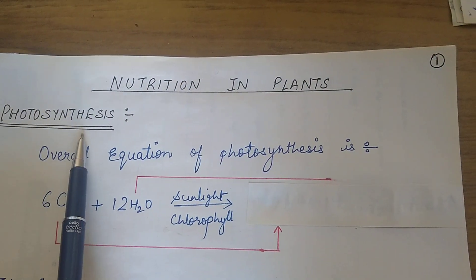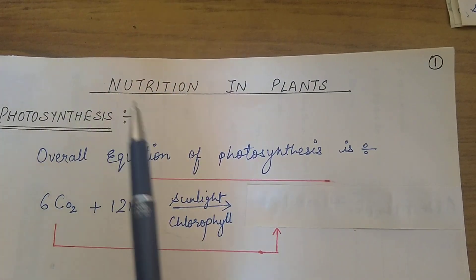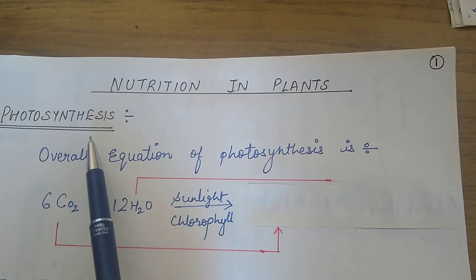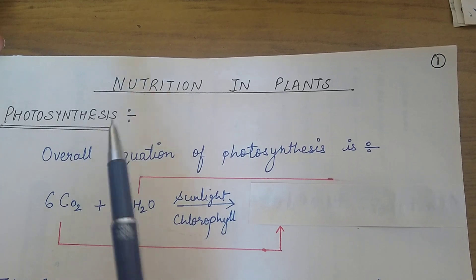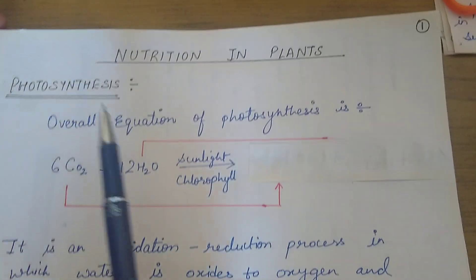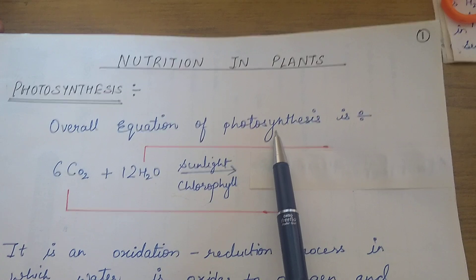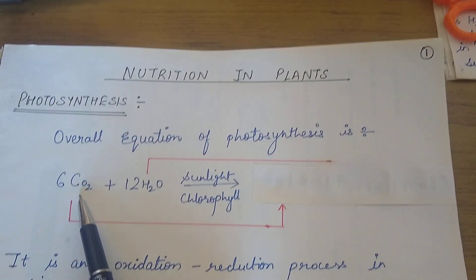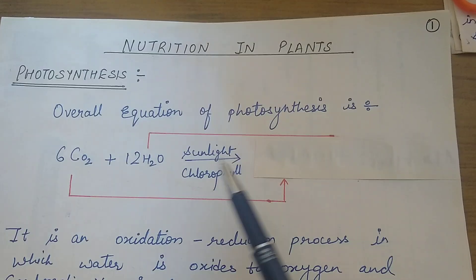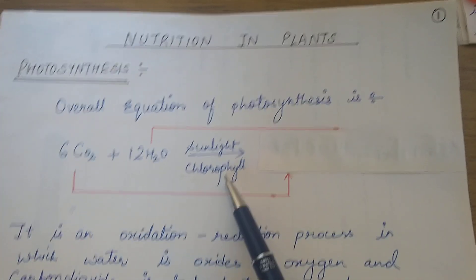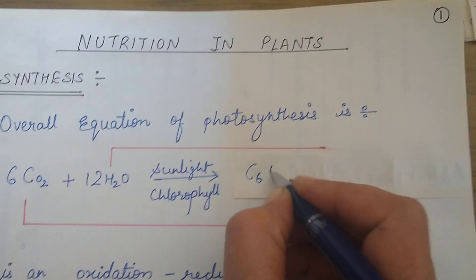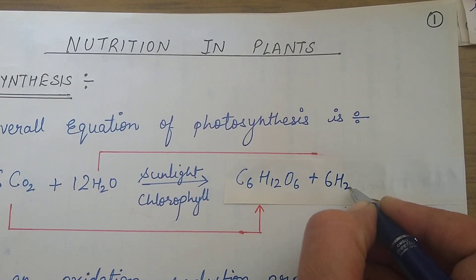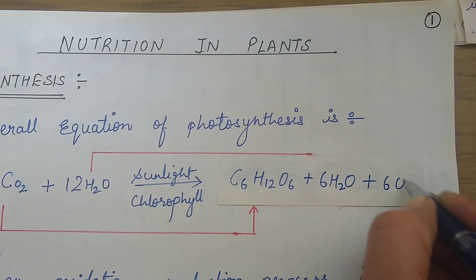First heading is photosynthesis. As you know, all plants synthesize their food with the help of photosynthesis, in which they prepare or synthesize their organic food with the help of inorganic components. The overall equation of photosynthesis is: 6 molecules of carbon dioxide plus 12 H₂O, in the presence of sunlight and chlorophyll, they form glucose — C₆H₁₂O₆ — plus 6 molecules of water plus 6O₂.